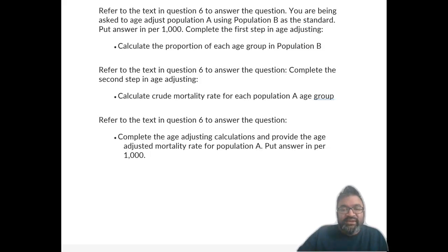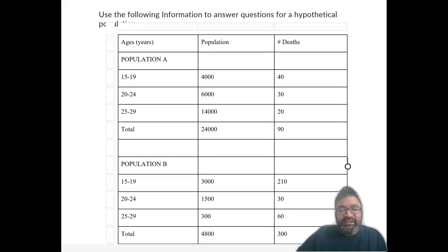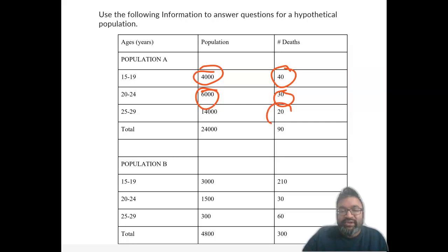Calculating crude mortality rate for each population A age group is something that you want to take a look at. So let's take a look at this here. So when we're calculating this, what we want to do is go into each age group in population A and calculate the crude mortality rate. So remember the total we already did in the first place. And then now 40, you can calculate this, 40 over 4,000 for 15 to 19, 30 over 6,000 for 20 to 24, 25 to 29 is 20 over 14,000. So that's the crude mortality rate in population A per age group.